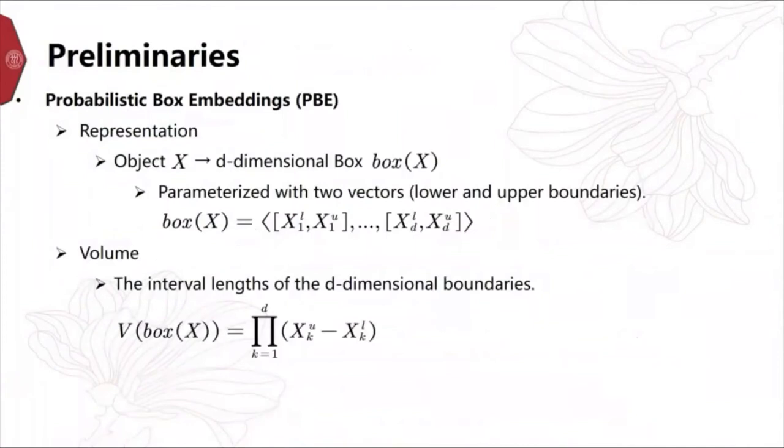We give some preliminaries. Box embedding represents objects as a D-dimensional box. The box can be parameterized with two vectors, which correspond to its lower and upper boundaries. We can compute its volume by using the product of D-dimensional interval lengths.